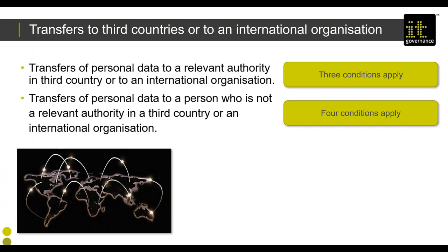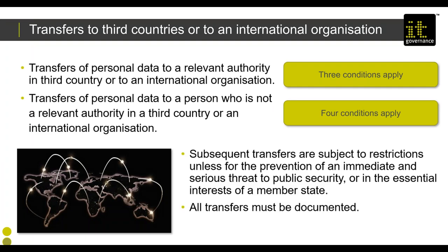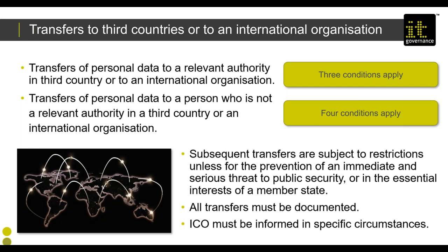Transfers to third countries and international organisations are a complex area covered by Part 3. For transfers to a relevant authority or international organisation, three conditions apply. For transfers to a person who is not a relevant authority in a third country or international organisation, a further four conditions apply — giving a total of seven. There are also restrictions on onward transmission, and in particular, for transfers to a non-relevant authority or non-international organisation, you must notify the ICO that the transfer has been made.